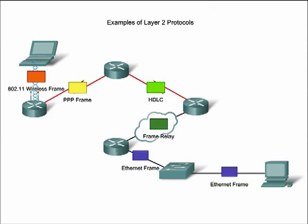In a TCP/IP network, all layer 2 protocols work with the internet protocol at layer 3. However, the actual layer 2 protocol used depends on the logical topology of the network and the implementation of the physical layer. Layer 2 protocols that will be covered in CCNA courses include Ethernet, Point-to-Point Protocol or PPP, High-Level Data Link Control or HDLC, Frame Relay, and Asynchronous Transfer Mode or ATM.